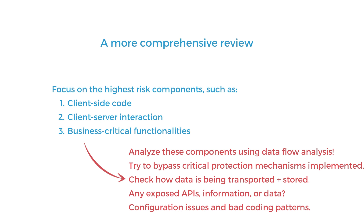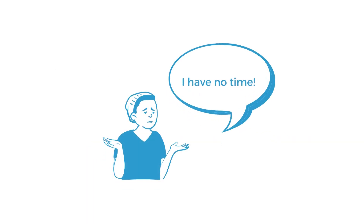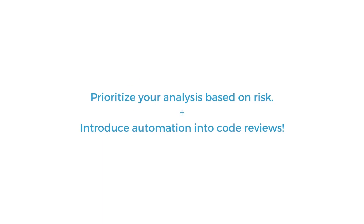This process will really help you uncover a lot of the vulnerabilities hiding in your code. But doing security code reviews manually can be quite tedious and time-consuming, and it's not really possible to review every single line of code you write. That's why you should prioritize your manual analysis based on risk and business importance, but you should also incorporate automation into code reviews.